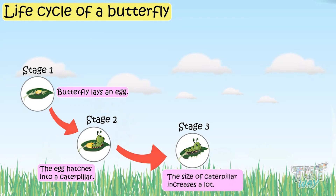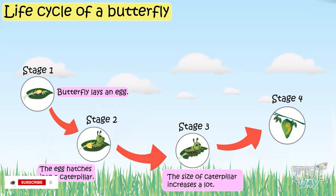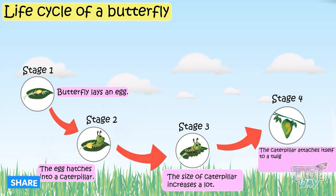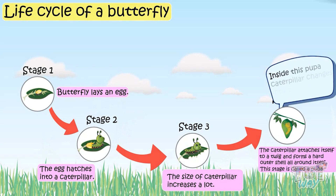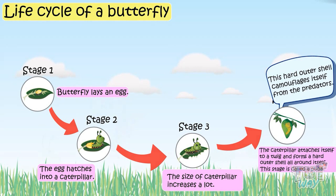The size of the caterpillar increases a lot — this is the third stage of a butterfly's life cycle. Now comes the fourth stage: the caterpillar attaches itself to a twig and forms a hard outer shell all around itself, and this is then called a pupa.